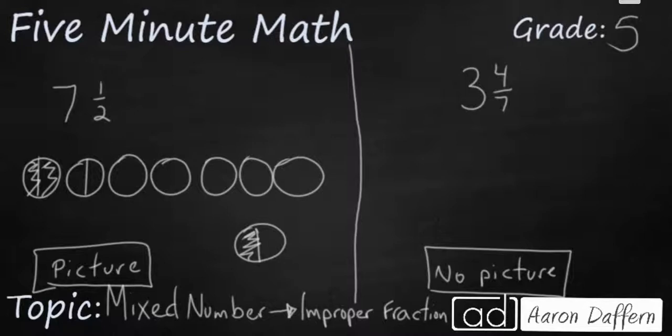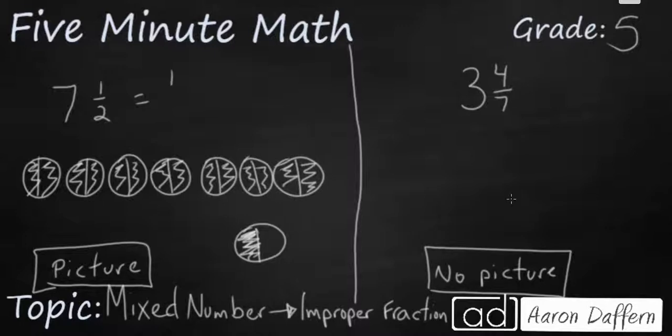So 1, 2, 3, 4, 5, 6, 7, 8, 9, 10, 11, 12, 13, 14 and then the 15th down here. So 7 and 1/2 makes 15 halves.